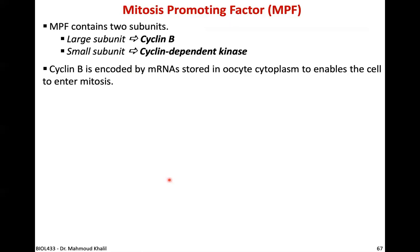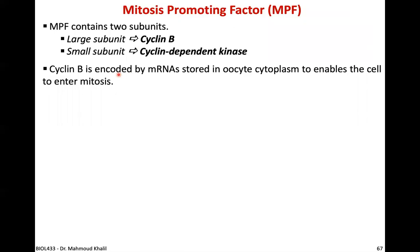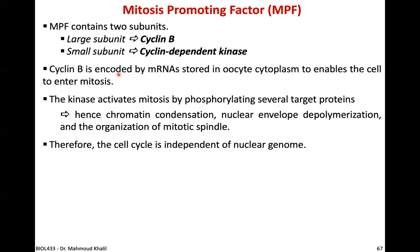MPF contains two subunits: cyclin B and cyclin-dependent kinase (CDK). Cyclin B is encoded by messenger RNA stored in the oocyte cytoplasm, so no transcription is needed. The CDK activates mitosis by phosphorylating several target proteins, causing chromatin condensation, nuclear envelope depolymerization, and organization of the mitotic spindle. Therefore, the early cell cycle is independent of the nuclear genome.